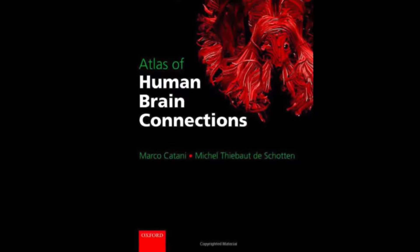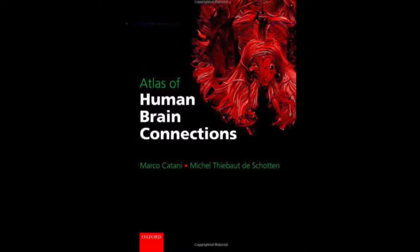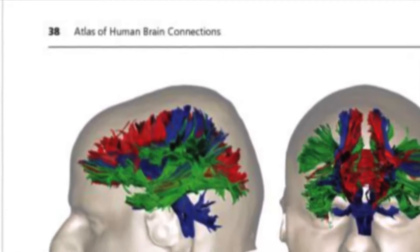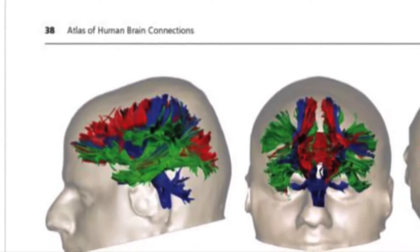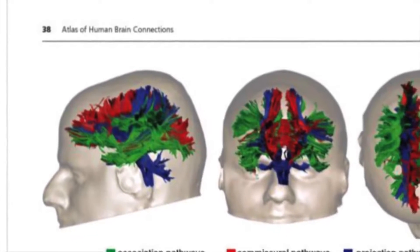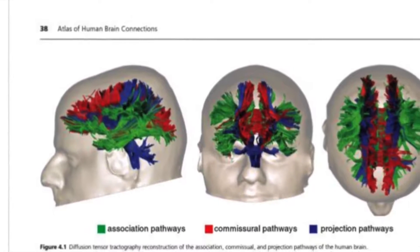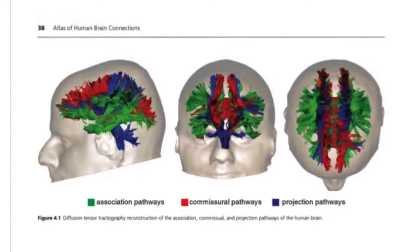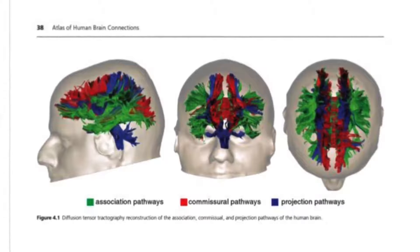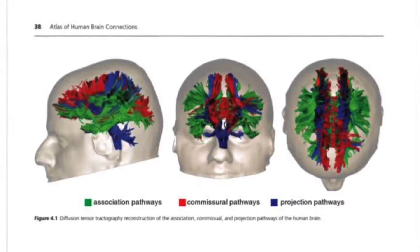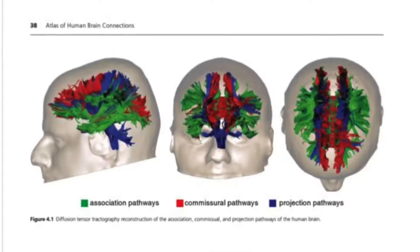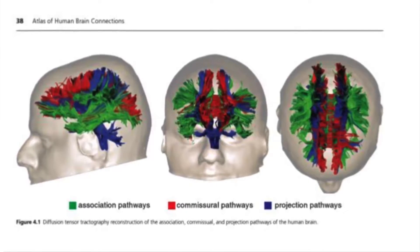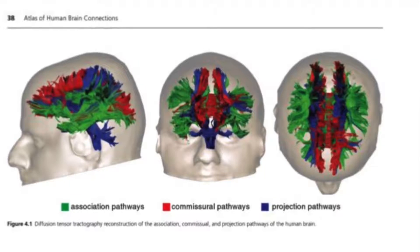2012 saw the publication of the Atlas of Human Brain Connections. On page 38 of the Atlas, there's a tractography reconstruction of the association, commissural, and projection pathways of the brain's neural connections. The association pathways begin and end within each separate brain hemisphere — that's the left and right sides of the brain. In these pictures they've been coloured green. These association neural connections are involved in the higher cognitive functions of language, visual-spatial processing, memory, emotion, and praxis.